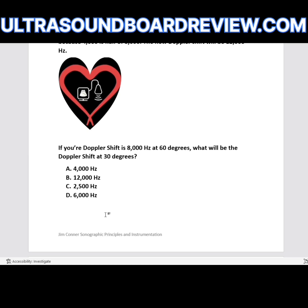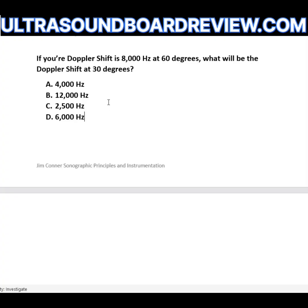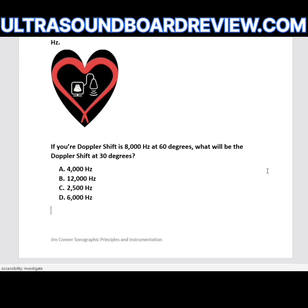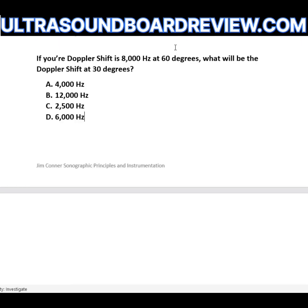If your Doppler shift is 8,000 Hz at 60 degrees, the Doppler shift at 30 degrees — the correct answer is B. The general rule: anytime your angle of installation decreases, your Doppler shift will increase, and anytime your angle increases, your Doppler shift will decrease. If your Doppler shift is 8,000 Hz at zero degrees, the Doppler shift at 30 degrees is answer D, because going from zero to 30 degrees decreases the shift by 25 percent.